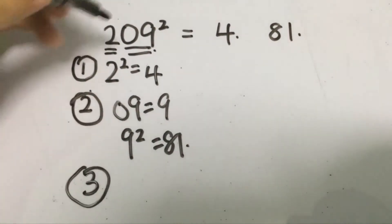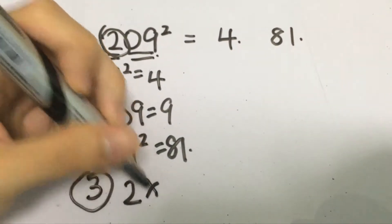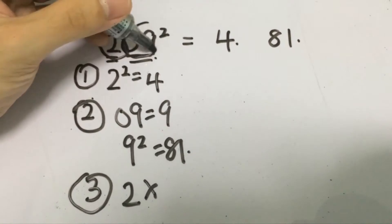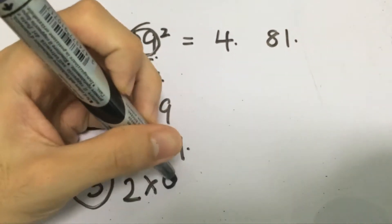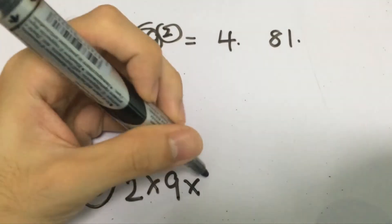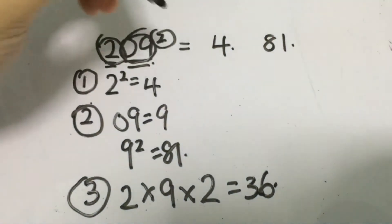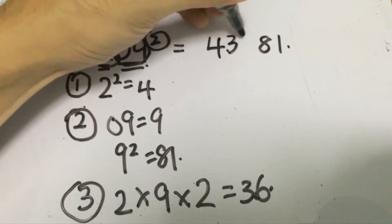And last but not least what we'll do is that we'll take this first digit which is 2 times the last two digits which is in this case 09 that is the same as 9 and we multiply by the power itself. So that is 18 times 2 that gives you 36 and we fill this up.